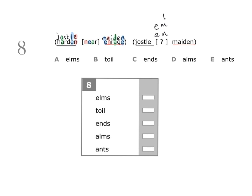Moving on to the last letter of 'near', which is R. There's an R in 'harden' which corresponds to the letter S, and there's an R in 'enrage' which corresponds to the letter I. So our missing word ends in either S or I.